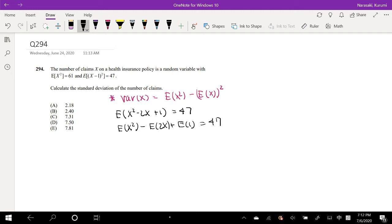Okay, so expectation of x squared we know is 61, minus expectation of 2x, but I can actually take that constant out, 2 times expectation of x, plus expectation of 1 is just 1 equals 47, right? So then because we already know E(x²), our goal is to find the expectation of x. So this is what we're solving for.